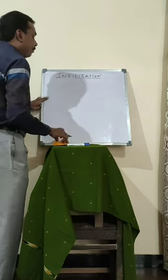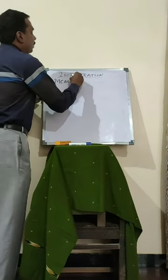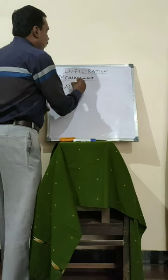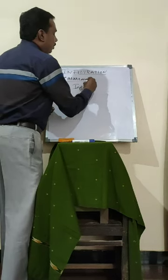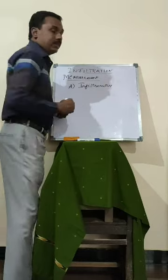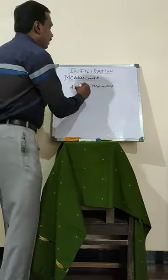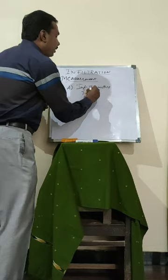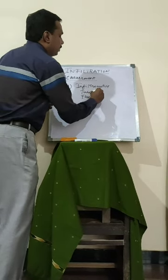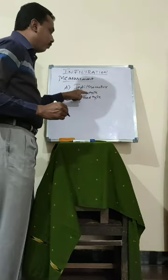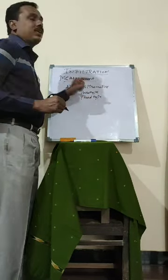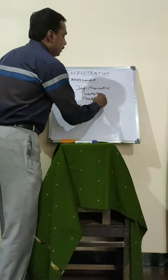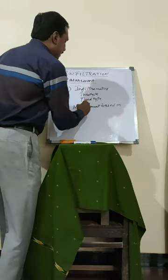Let us see the measurement — how we are going to measure infiltration. Infiltration is measured with infiltrometers, whether it is a simple infiltrometer called tube type, or a double ring infiltrometer called flood type. And measurement can also be based on subsidence.